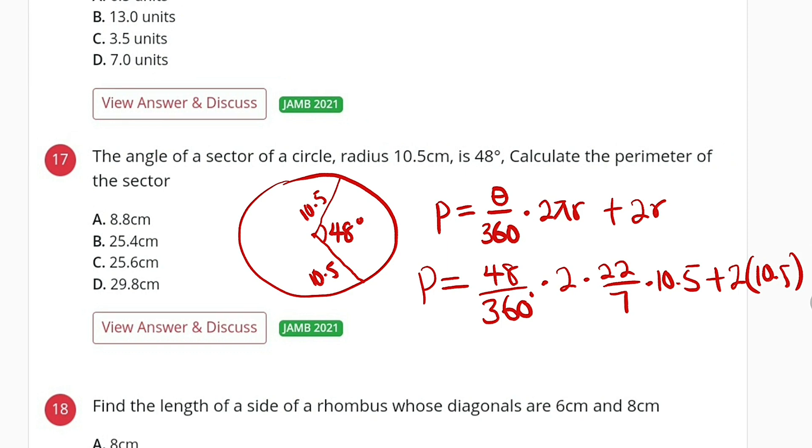So let me multiply and add everything directly. We have 48 divide by 360, multiply by 2, multiply by 22, divide by 7, then multiply by 10.5. Then we have to add 2 multiplied by 10.5. 2 multiplied by 10.5 is 21.